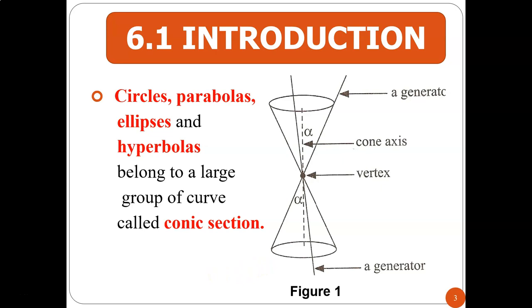What is a conic section? Circles, parabolas, ellipses, and hyperbolas belong to a large group of curves called conic sections. We can see in the figure here — we have a double cone with angle alpha, a cone axis, a vertex, and a generator line. All of these shapes — circles, parabolas, ellipses, and hyperbolas — are known as conic sections.